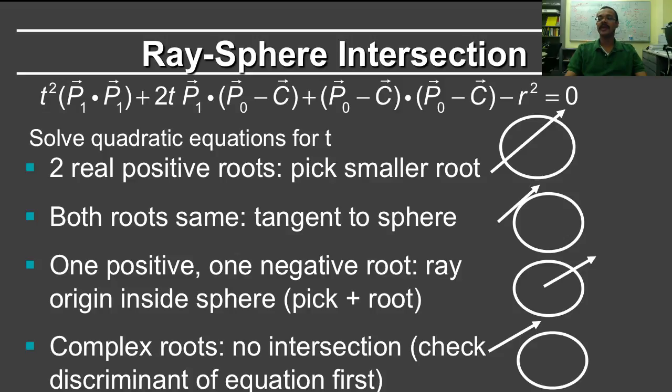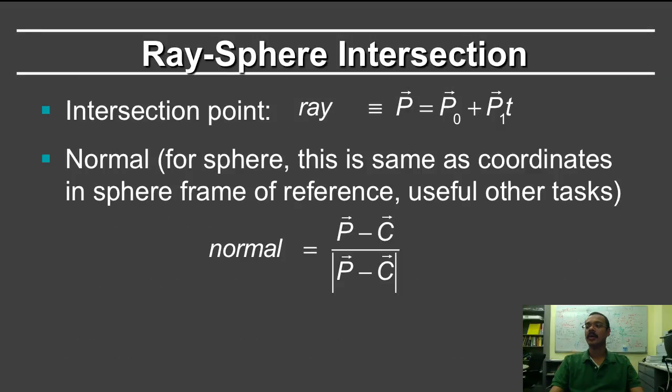If there is one positive and one negative root, then the ray is inside the sphere, which can happen if you have things like refractions. Once you have found the intersection point, you also need the normal for calculating the reflected direction. And this is useful for many other tasks as well.